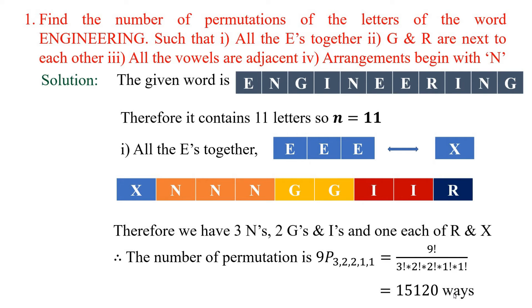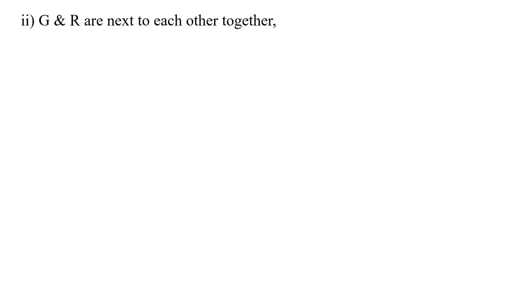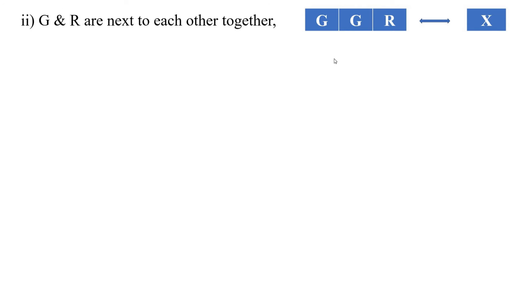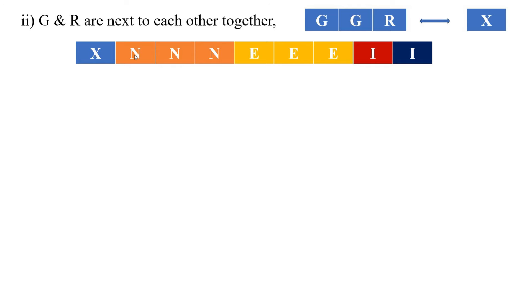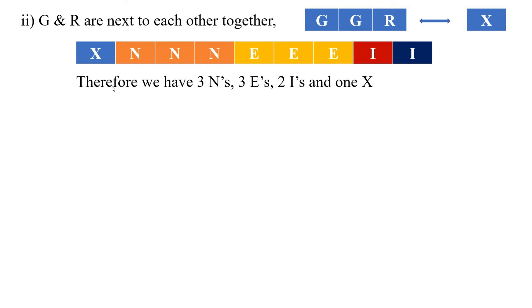Moving on to the second problem: G and R next to each other. I consider G, G, R as one letter called X. The remaining letters are: X, three N's, three E's, and two I's. So we have three N's, three E's, two I's, and one X, leaving us with 9 letters.